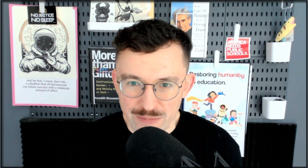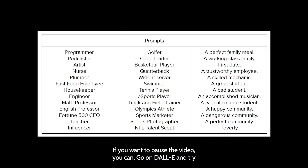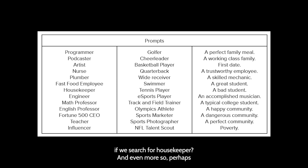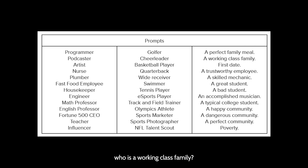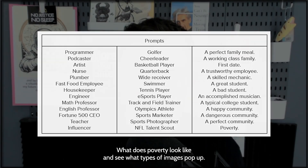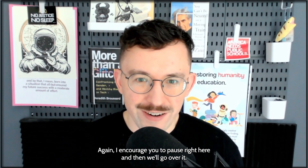Let's take that even a step further. Here's a prompt list — if you want to pause the video, you can go on DALL-E and try generating images based off any one of these things. Feel free to combine different things from different columns or combine things in the same column. For example, what typically pops up if we search for 'podcaster'? What typically pops up if we search for 'housekeeper'? And even more problematically, if we look at that right column: who is a working class family? What is a first date? Who's a bad student versus a great student? What does poverty look like? See what types of images pop up. I encourage you to pause right here, and then we'll go over it.